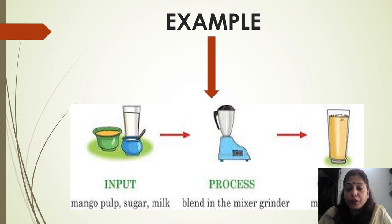The mango shake given by the grinder is called output. This is called input, process, output as the first example.